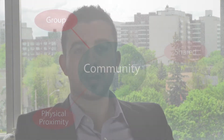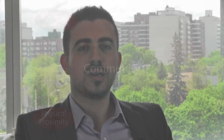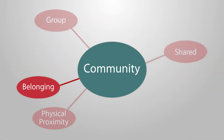The third common theme was group — any collection of individuals, networks, or clans are considered a group. A community always consists of more than just one person. Belonging was the fourth most common theme. Feeling a sense of unity, commitment, and bonding together over time are all examples of belongingness. If you don't feel like you belong to a community, then you are not part of it.